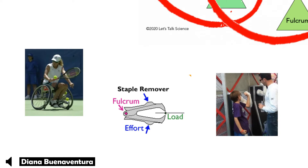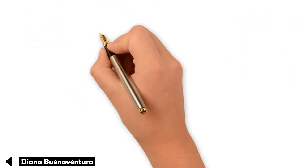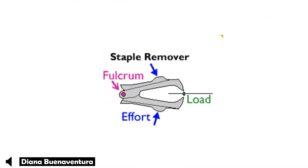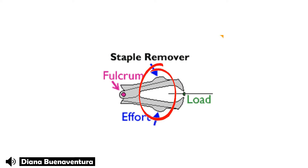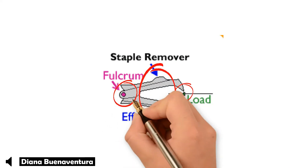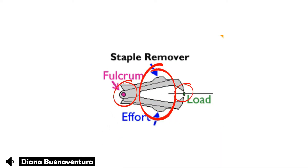These levers are useful for making precise movements. In a staple remover, the force is applied in the middle between the load and the fulcrum. The load is the item from which you are removing the staple, while the fulcrum is at the other end.